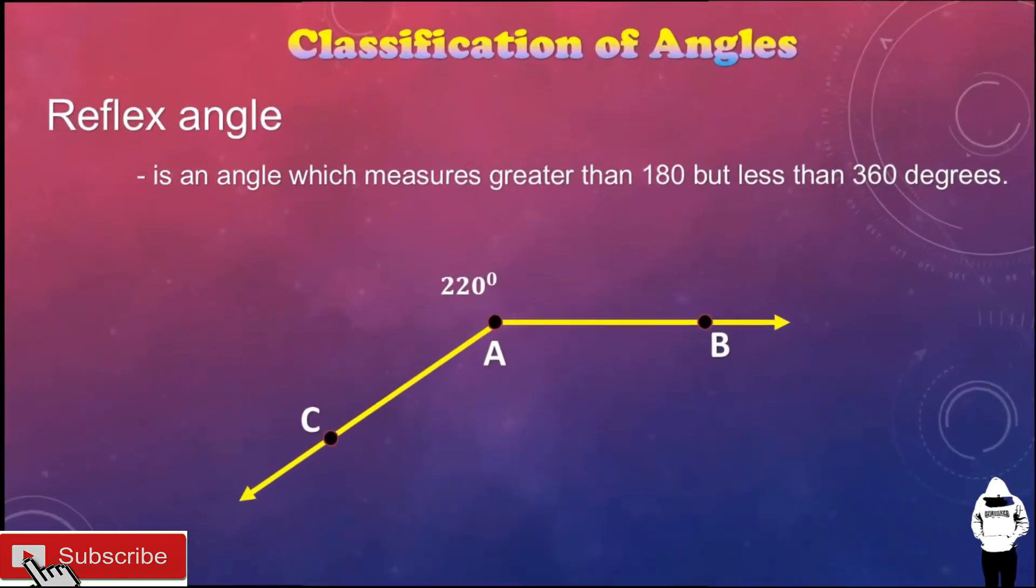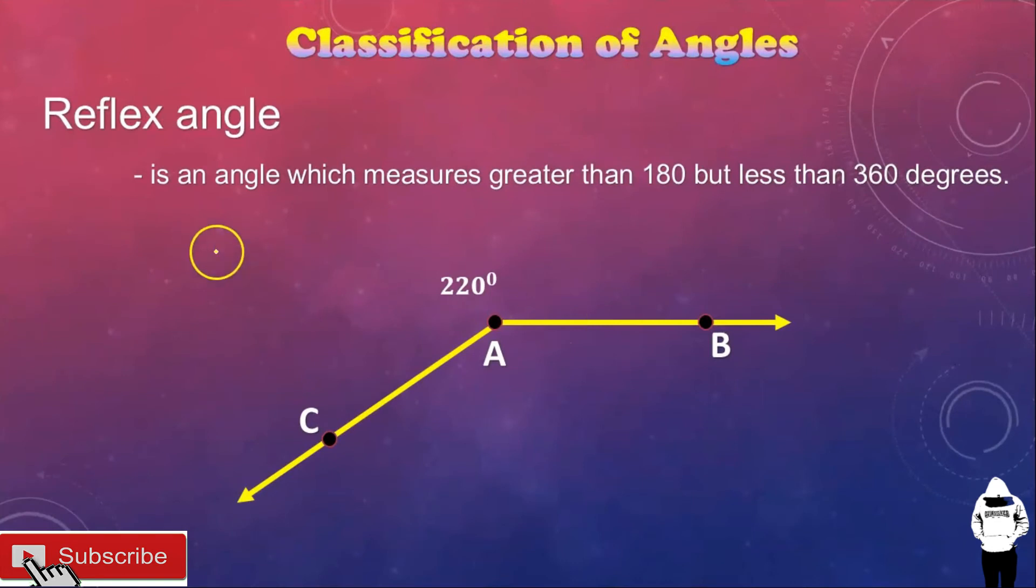Next, reflex angle. What is reflex angle? It's an angle which measures greater than 180 degrees but less than 360 degrees. So, itong angle na po ito, angle BAC, 220 degrees, nasa gitna ng 180 at 360 degrees. So, that is a reflex angle.